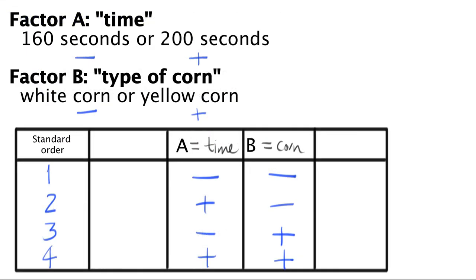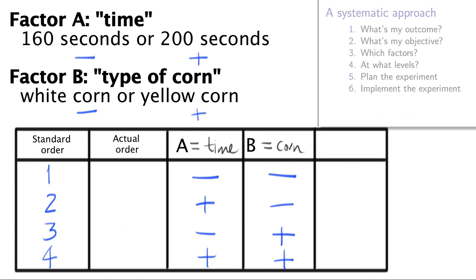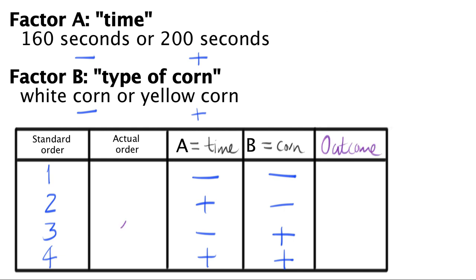So here the standard order column refers to the way in which we label the rows in standard order. The next column we add is the actual order column. This column represents the order in which experiments were actually run. Now we go start running our experiments and record the outcome variable. The first experiment I randomly picked was number 3. That experiment is run at short cooking times and with yellow corn. After the experiment is run, I recorded an outcome value of 62 popped kernels. Then I drew my next random number and found that I should run experiment 1. I recorded a value of 52 popped kernels.